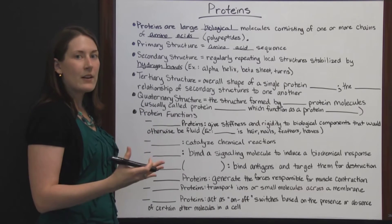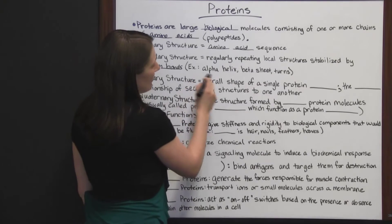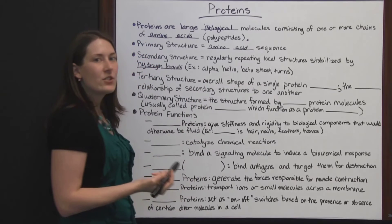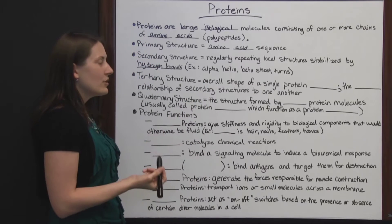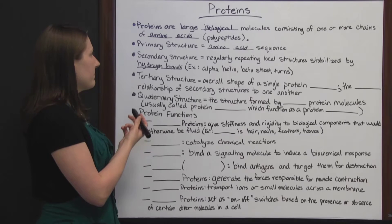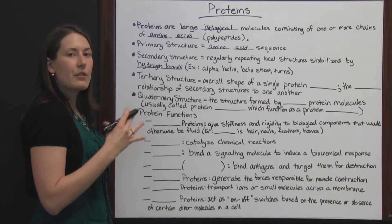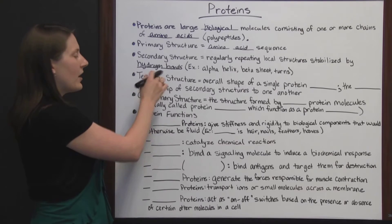Some examples would be the alpha helix, beta sheet, and turns. Those are just some different shapes that the proteins can take whenever there are a few of them joining together with hydrogen bonds.